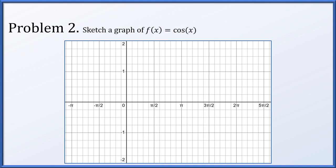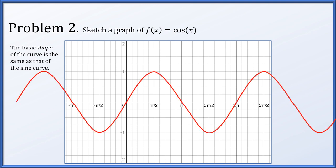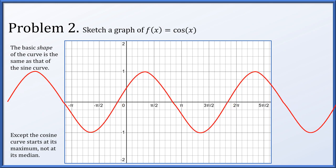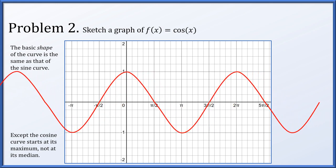Problem two: let's get a graph of f(x) = cos(x). The basic shape of the cosine curve is the same as that of the sine curve. However, the cosine curve starts at the maximum — we're tracking a horizontal coordinate, and on the unit circle all the way to the right is the maximum horizontal coordinate. So we want this curve to start at its maximum, not at the median. We simply slide it over, starting at its maximum height of one. And here is a plot of f(x) = cos(x).